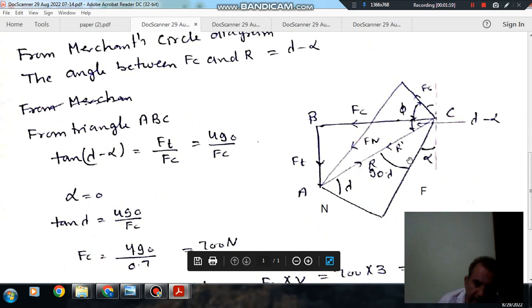This angle is right angle triangle. So this will be 90 minus lambda, and this is alpha. So this angle will be lambda minus alpha. Because this is 90, 90 minus 90 plus lambda minus alpha, so it will be lambda minus alpha. Now we have the angle between resultant and Fc.